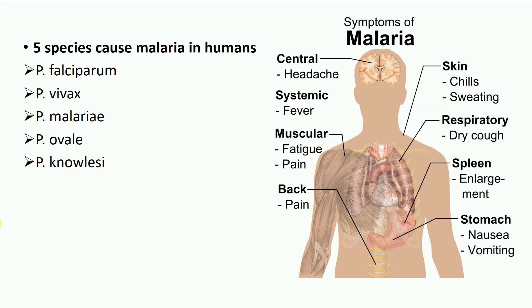In human beings, 5 species of Malarial Parasite can cause Malaria. These are Plasmodium falciparum, Plasmodium vivax, Plasmodium malariae, Plasmodium ovale, and Plasmodium knowlesi.